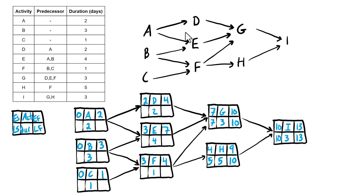Where there are two successors competing, we do the opposite of the forward pass — we bring in the smallest of the late start values into the late finish of the predecessor. So for activity F, we have seven or five; we bring in five. Five minus one is four. Activity C has only one successor, so we bring that four in, and four minus one is three — giving C a late start of three. Activity D has only one successor, so we bring that seven into both late finish positions.